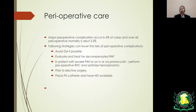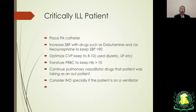For perioperative care, major preoperative complications occur in about 6 percent of cases and overall mortality is about 3.5 percent. Avoid general anesthesia when possible in patients with severe PAH. Evaluate and treat decompensated right heart failure. In patients with severe PAH or those on prostacyclin, perform preoperative right heart catheterization and optimize hemodynamics prior to elective surgery. For critically ill patients, place a Swan-Ganz catheter; if hypotensive, use vasopressors such as dobutamine or norepinephrine to keep systolic BP above 90; transfuse to keep hemoglobin above 10.